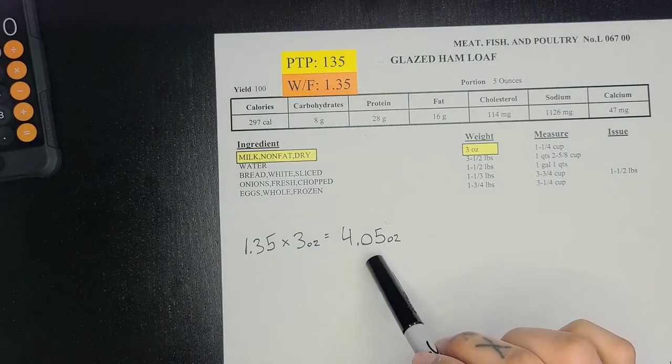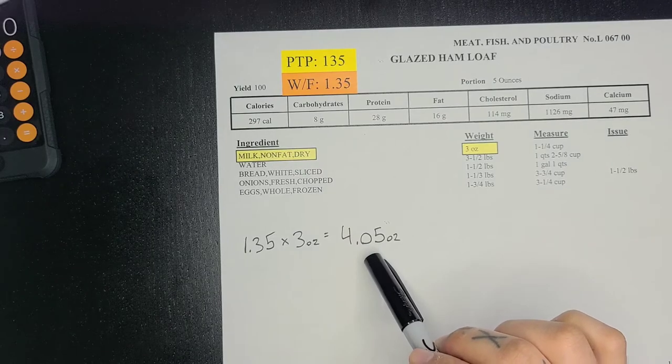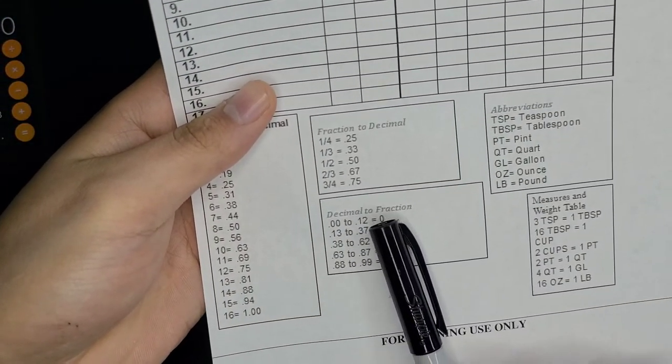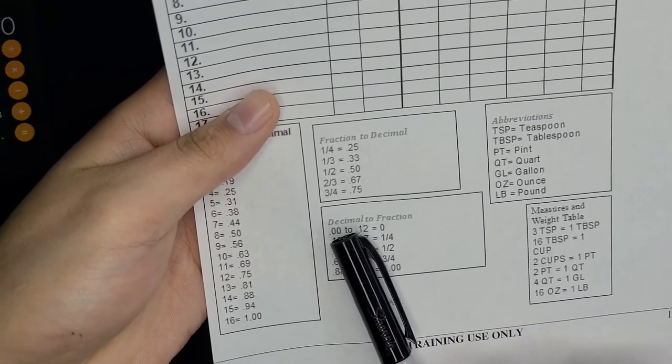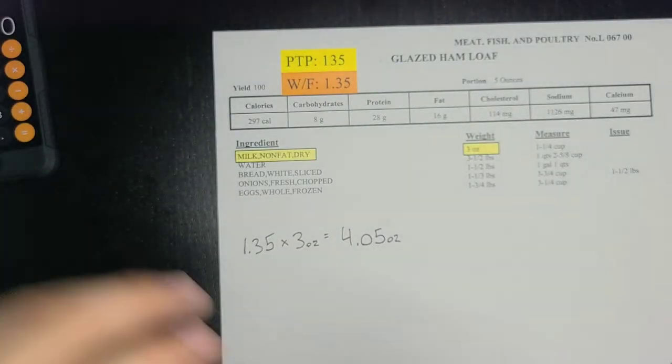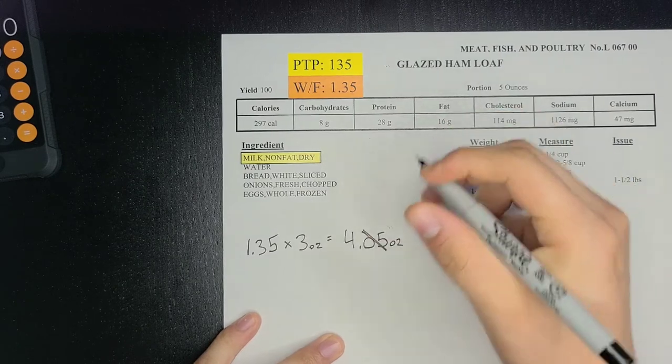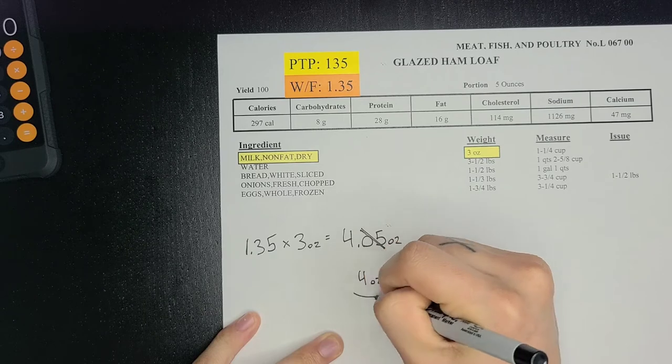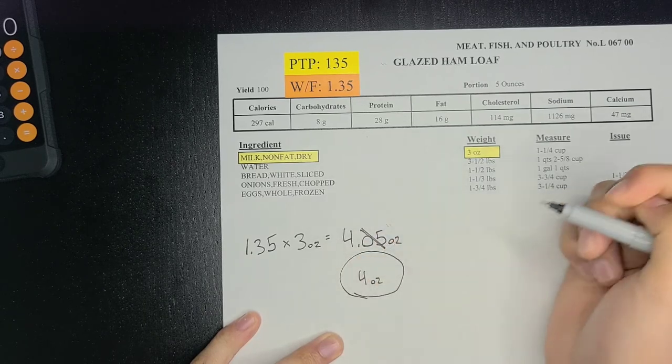So this was 0.05. 0.05 falls in between right here—zero—so it's nothing. So this just cancels off like that and it ends up being 4 ounces. That is your final answer.